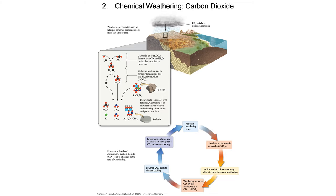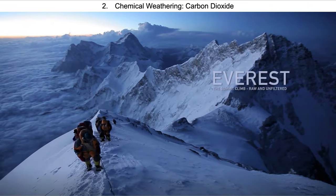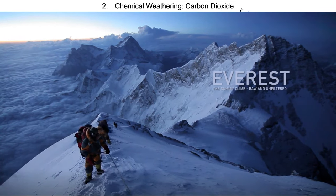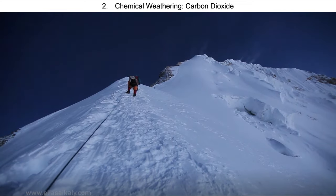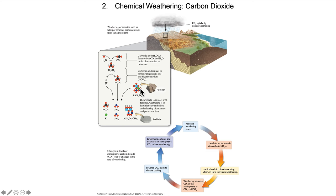Chemical weathering in the natural world is driven largely by carbon dioxide. The weathering of silicates such as feldspar removes CO2 from the atmosphere. As mountains rise, the amount of CO2 required to weather them increases, drawing CO2 down out of the atmosphere. When we make big mountain ranges in geologic time, we draw down CO2. This carbonic acid formed when CO2 mixes with water vapor breaks down feldspar, removing magnesium and iron and leaving behind potassium and aluminum.